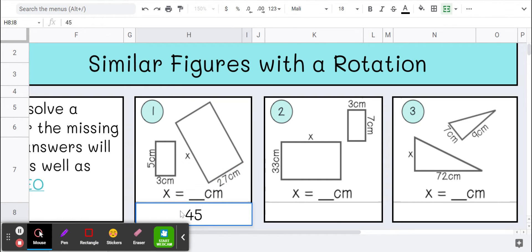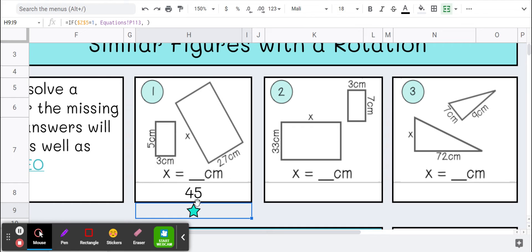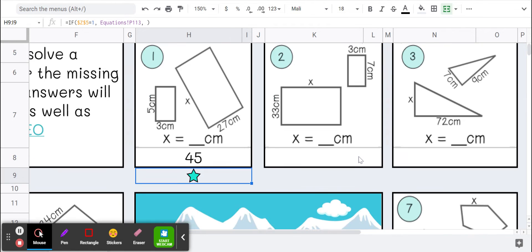I'm going to type 45 in here and hit enter, and if I'm correct, a star appears. Let's try another one.